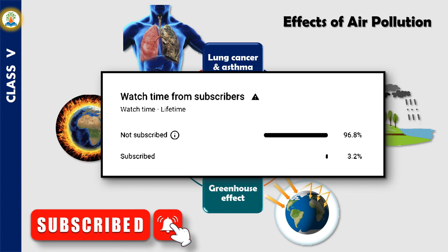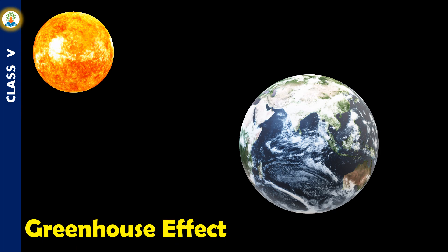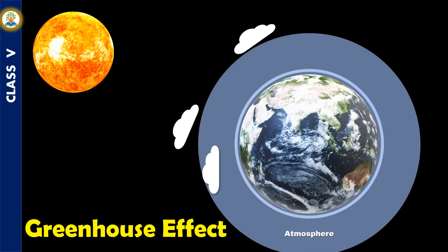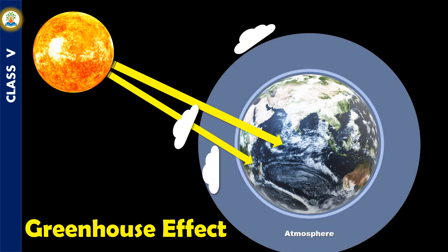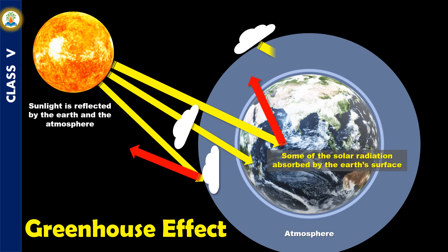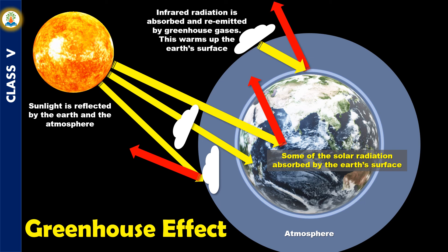The greenhouse effect is a natural process that warms the earth's surface. Some gases like carbon dioxide, nitrous oxide, methane, chlorofluorocarbon, and water vapors do not allow the heat of the sun to escape back into space. This makes the earth warmer. These gases are called greenhouse gases and this effect is called the greenhouse effect.